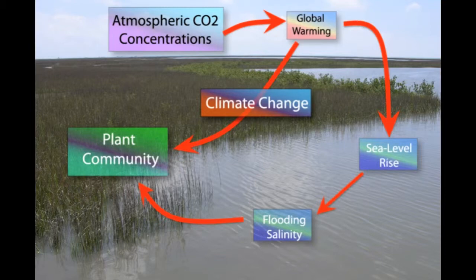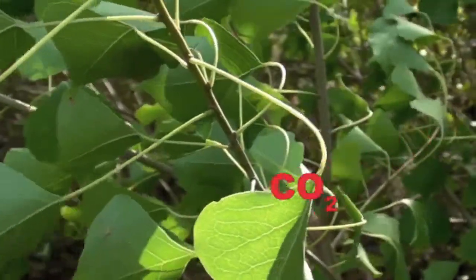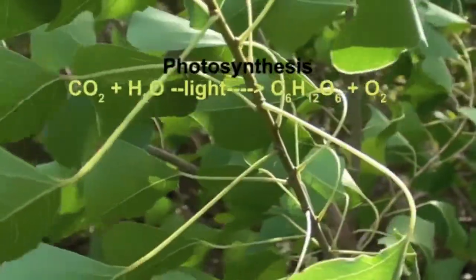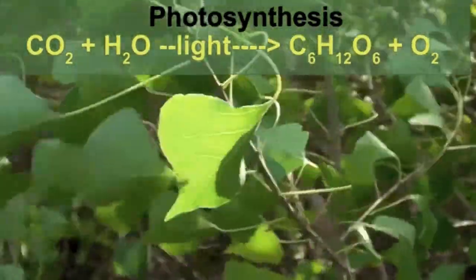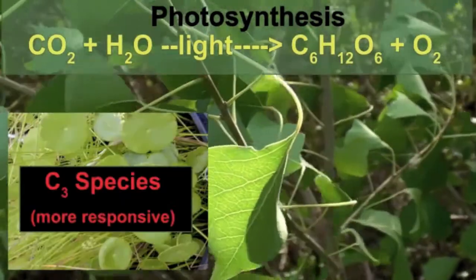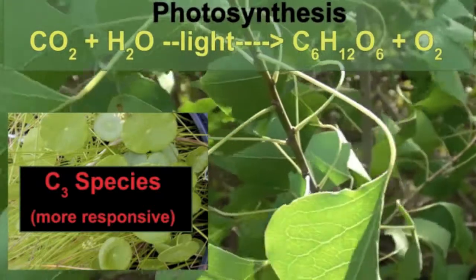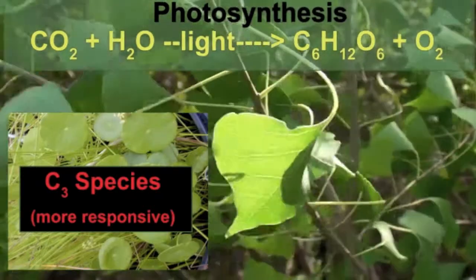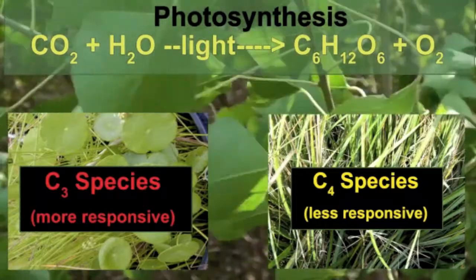CO2 also has a direct fertilization effect on plants. Plants respond to higher CO2 with increases in net photosynthesis and water use efficiency, leading to greater productivity. Some plants are more responsive to increases in CO2 — these are called C3 species. C4 species are less responsive to CO2 because they are already quite efficient at capturing CO2.